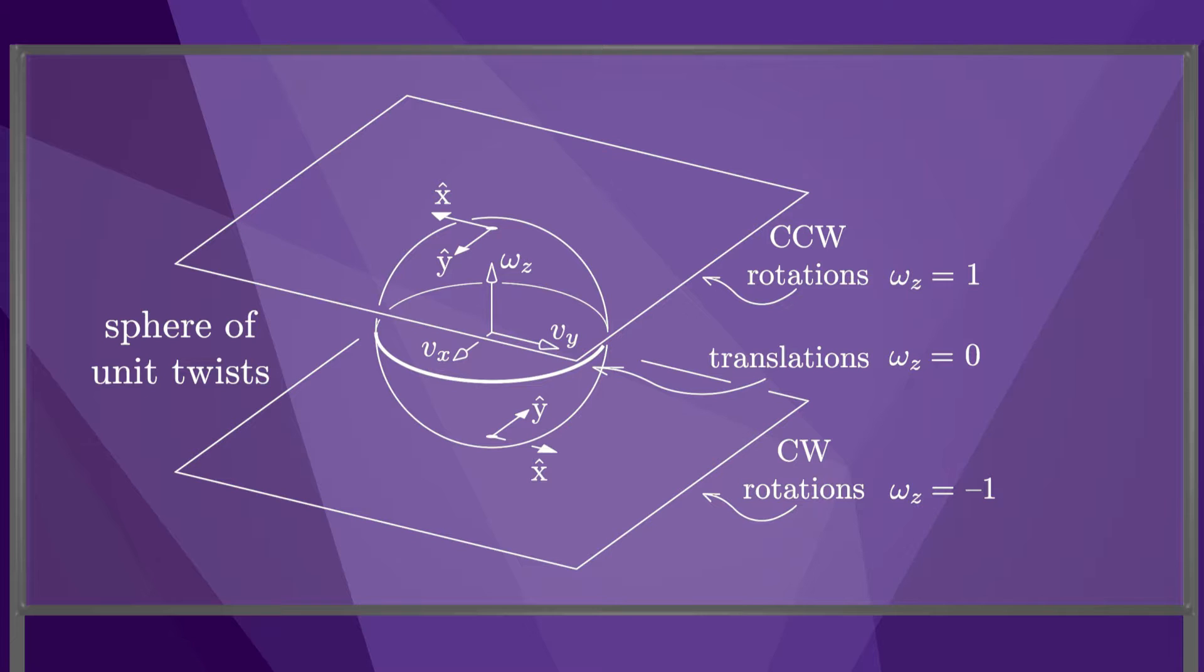The top plane is the plane of rotation centers with a plus sign label for a positive angular velocity. The bottom plane is at omega z equals minus one, and it is the plane of rotation centers with a minus sign label for a negative angular velocity.